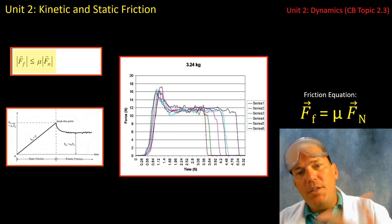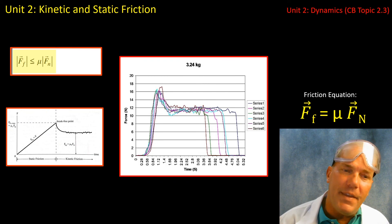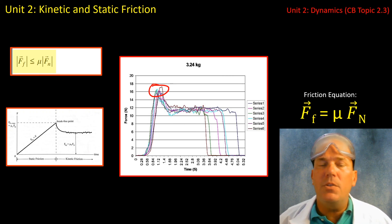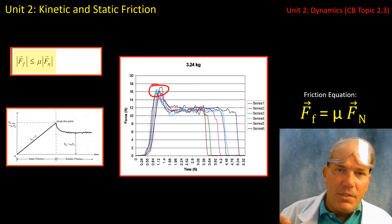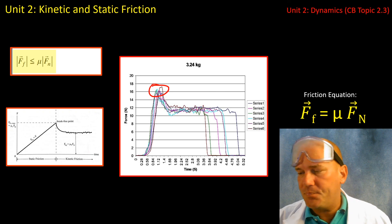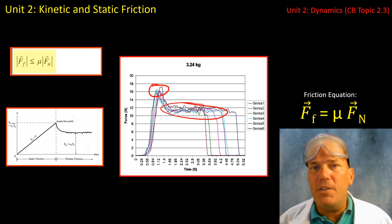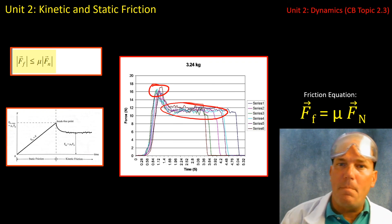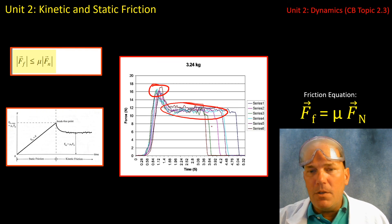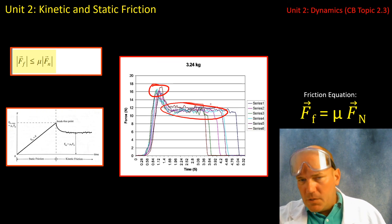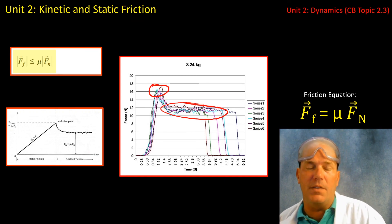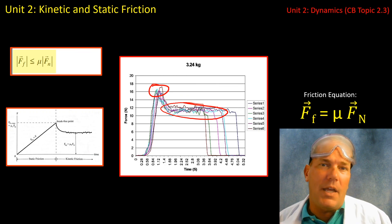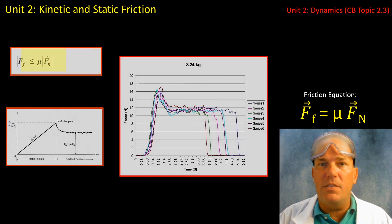The graph you will generate in lab will look more like this. Again, you can see this maximum threshold, after which the object begins to slide. You can see kinetic friction is less than the maximum static friction. And then at the end of the graph, that's just when the object was no longer being slid across the surface. This is very similar to what your graphs will look like on the LabQuest 2 unit when we do this lab.